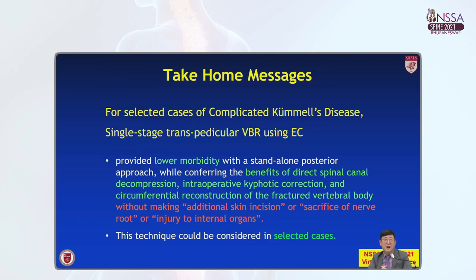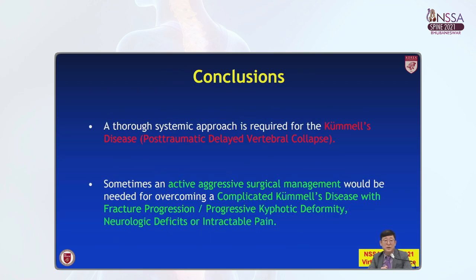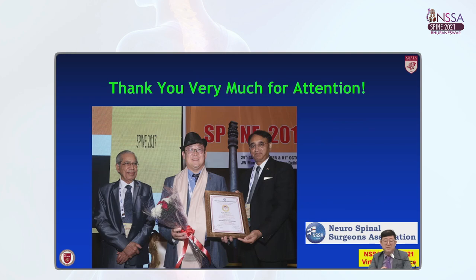This is the take-home message. For very selected cases of complicated Kummel disease, single-stage transpedicular vertebral body reconstruction using expandable cages can provide low morbidity of the standard posterior approach and benefits of direct spinal cord decompression and vertebral body reconstruction without additional skin incision or sacrificing nerve roots. As a conclusion, a thorough systemic approach is required for Kummel disease, and sometimes active aggressive surgical management would be needed for overcoming complicated Kummel disease with fracture progression, progressive kyphotic deformity, neurologic deficit, or intractable pain. Thank you very much for your attention.